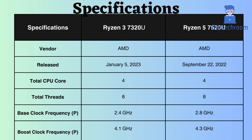The boost clock frequency of the Ryzen 3 7320U is 4.1 GHz, whereas that of the Ryzen 5 7520U is 4.3 GHz. Considering the boost frequency, we can suggest that the Ryzen 5 7520U might perform better under heavy CPU loads.